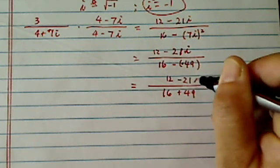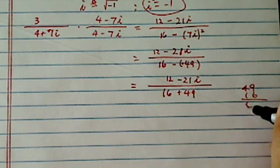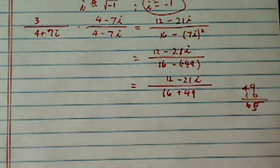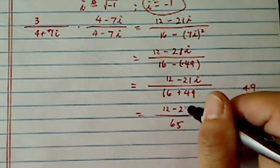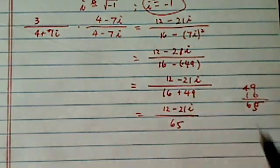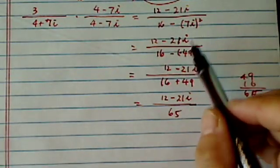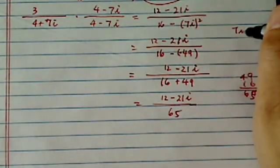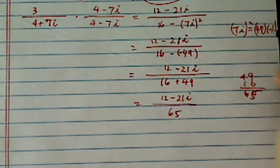On top, I have 12 minus 21i. That's added together, 16, that's 65, one more step, 65, 12 minus 21i. That's my answer. Once again, since 7i squared is equal to 49 times minus 1, so I have minus 49 here.